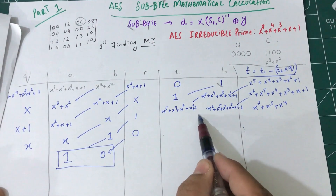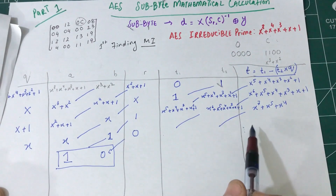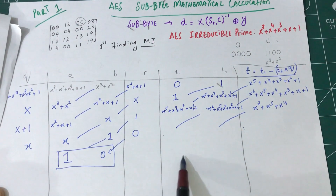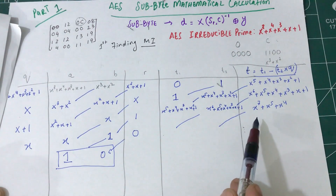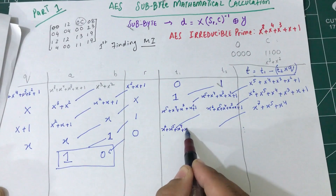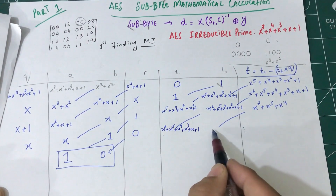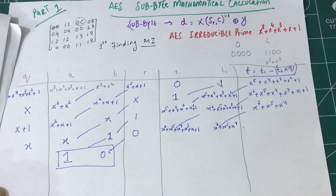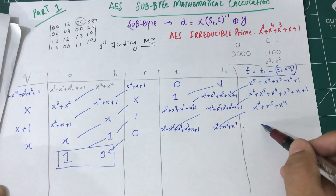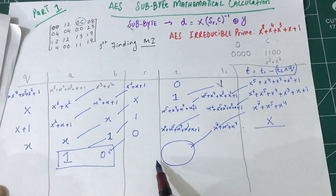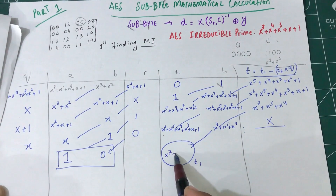Do I actually need to solve this further? No, I don't need to solve this, because my t1 value is going to become the multiplicative inverse I'm looking for. So I'm simply writing this down: x^5 plus x^4 plus x^3 plus x plus 1 gives x^7 plus x^5 plus x^4.